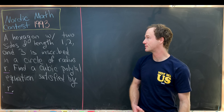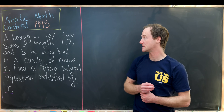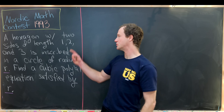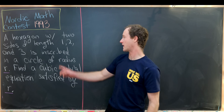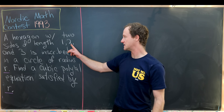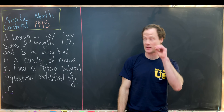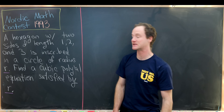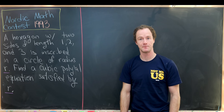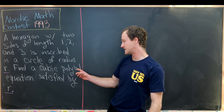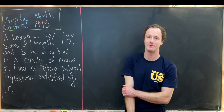Here we have a nice geometry problem from the 1993 Nordic Math Contest. We want to assume that we have a hexagon with two sides of length one, two sides of length two, and two sides of length three that is inscribed in a circle of radius r, where r is unknown. Our final goal is to find a cubic polynomial equation satisfied by r.